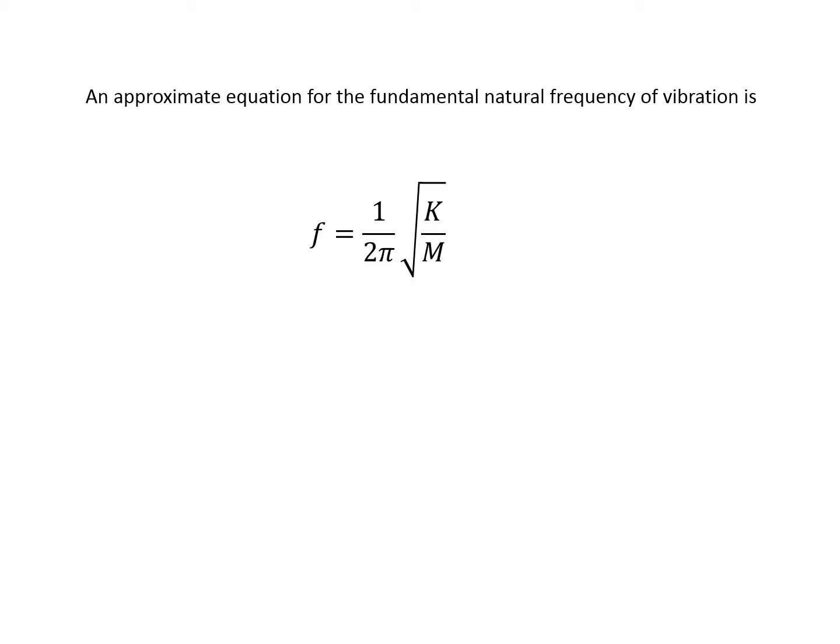The approximate equation for fundamental natural frequency of vibration is f equal to 1 over 2π times the square root of k over m. The stiffness can simply be computed as a ratio of an applied load P to the beam deflection.